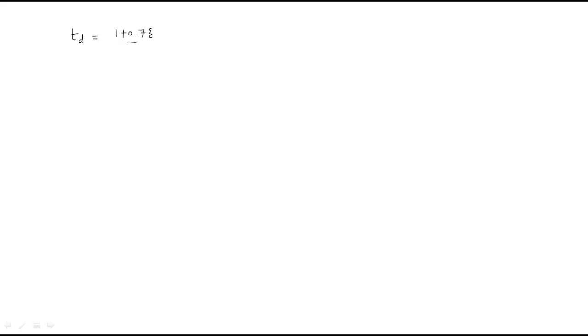Next, we find the delay time. The formula for delay time for a second-order system is: td = (1 + 0.7ζ) / ωn. Substituting ζ = 0.6 and ωn = 5: td = (1 + 0.7 × 0.6) / 5 = 0.284 seconds.